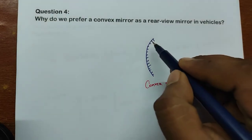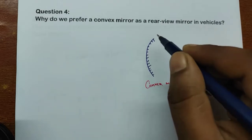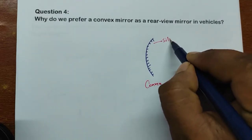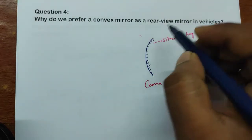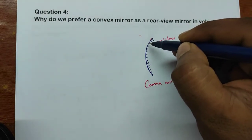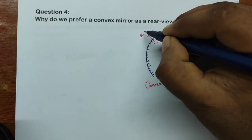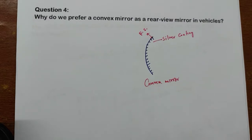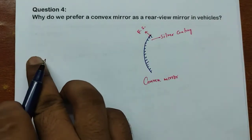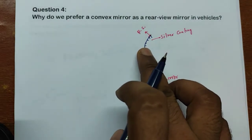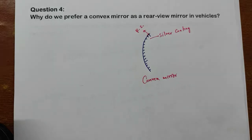In a convex mirror, inside the mirror you can see there is a silver coating here. And this side is a reflecting surface — you can see this side is the reflecting surface. That means when the light ray comes from this side, it will fall on the mirror, and after that reflection happens and the image is formed.